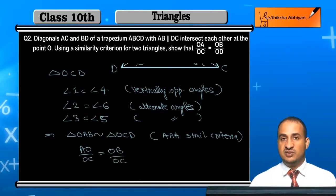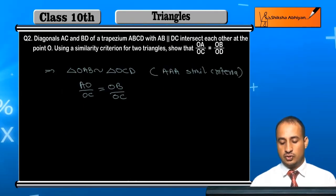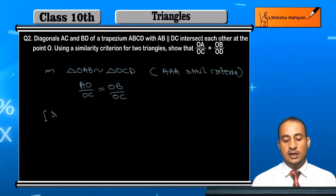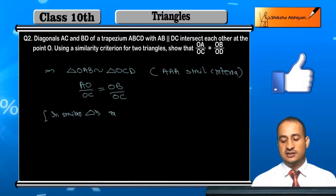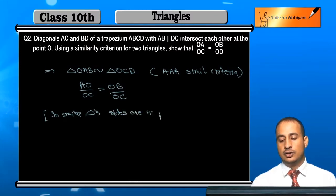I can write this because in similar triangles, sides are in proportion. In similar triangles, sides are in the same ratio.